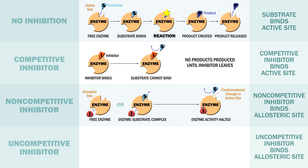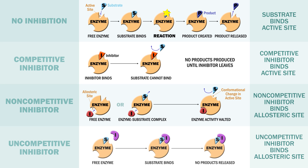Noncompetitive inhibitors not only bind to free enzymes, but also to those bound to substrates. This means that they bind not to the active site, but to the so-called allosteric site. In doing so, they cause a conformational change that increases or decreases activity of the enzyme. Uncompetitive inhibitors only bind to enzymes when the enzymes are bound to substrates, and they bind in such a way that the enzyme cannot release its products.